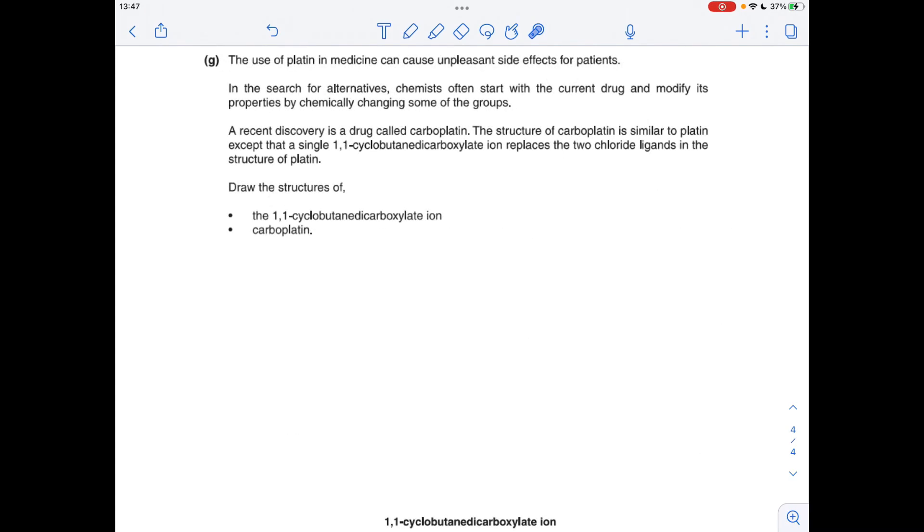Moving on to part G, we've got to come up with structures for this ion here and carboplatin, which is this alternative for platin in medicine. Similar structure to platin, but the two chloride ligands have been replaced with this.